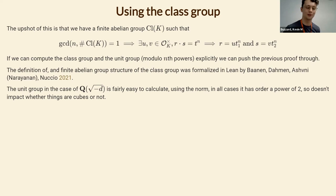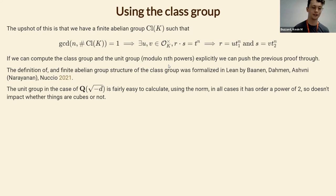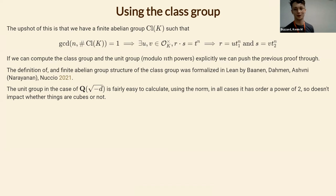If we can explicitly compute the class group — a finite abelian group — and also know the unit group modulo nth powers, we can push the previous proof through. What's been done before: the definition of the class group and its finite abelian group structure were previously formalized by Bard, Darwin, Ashmanee, and Nucio, roughly two years ago. The unit group is fairly easy to calculate in this case.